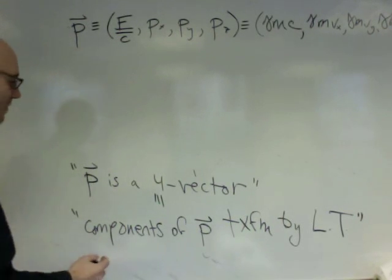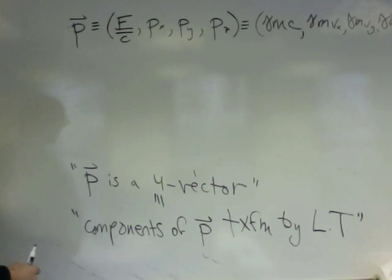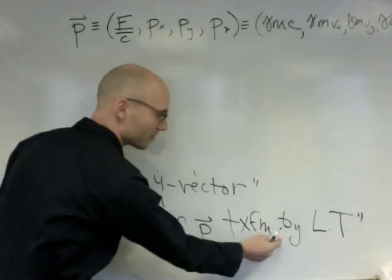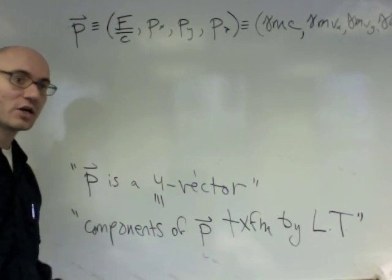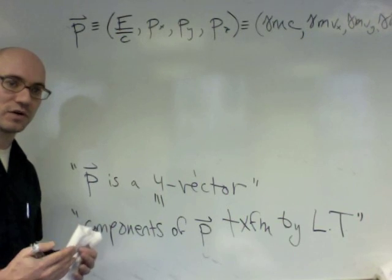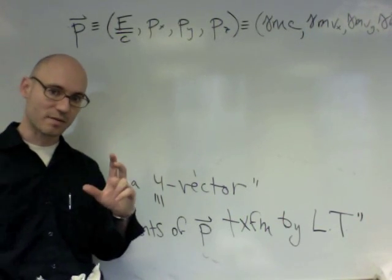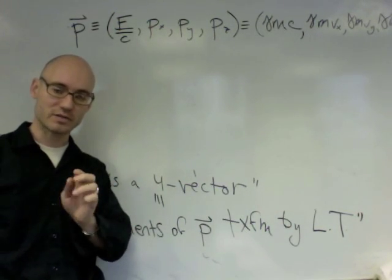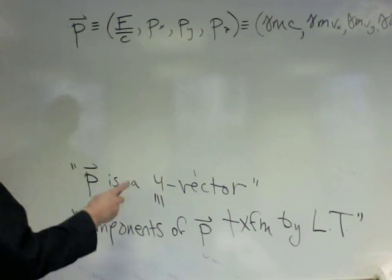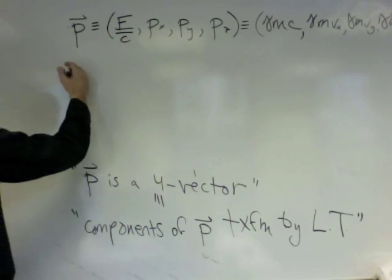Now, if this is a four vector and therefore it transforms according to Lorentz transformation, the Lorentz transformation, as you've seen in the book and in recitation, conserves this thing called the interval, which in the case of a spacetime displacement was delta T squared minus delta X squared minus delta Y squared minus delta T squared.